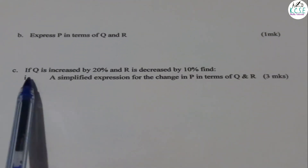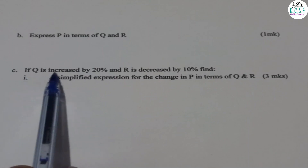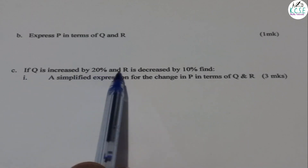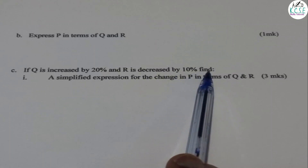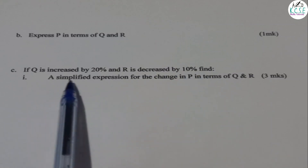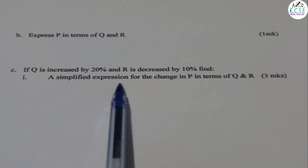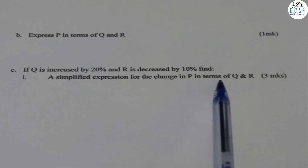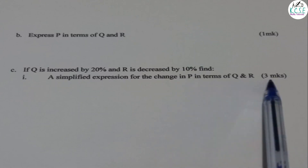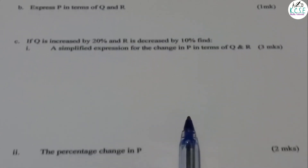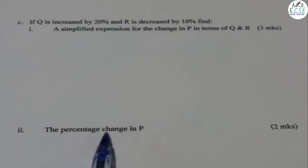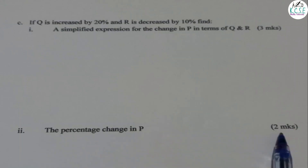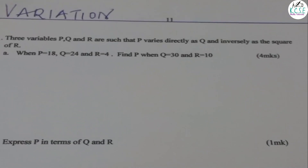Then part C: If Q is increased by 20% and R is decreased by 10%, find one — a simplified expression for the change in P in terms of Q and R (3 marks) — and two, the percentage change in P (2 marks). So that is the full question, 10 marks.